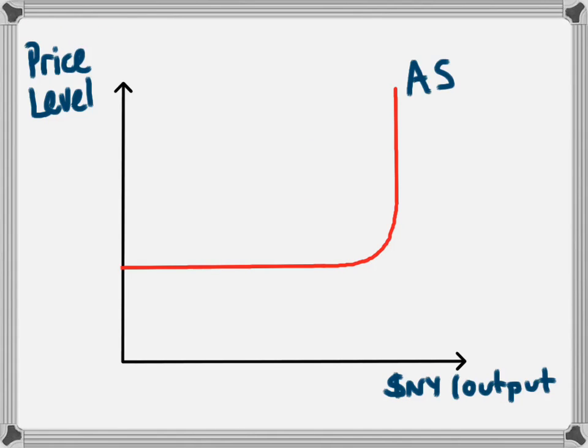It will explain to you how we arrive at an aggregate supply curve which looks like this. The big difference between this and the other model is that on the vertical axis instead of measuring expenditure, we're measuring price level.